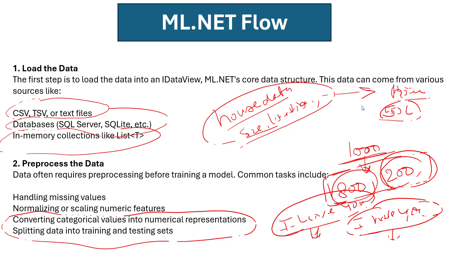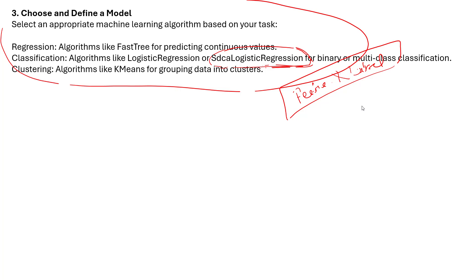The next step is splitting data into training and testing sets. ML.NET's MLContext provides a train-test split method where you specify the test fraction. For example, from 1000 records, 800 are used for training and 200 for testing. This split is done to achieve accurate and reliable predicted output.